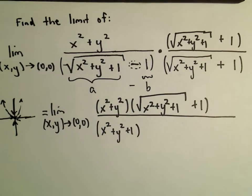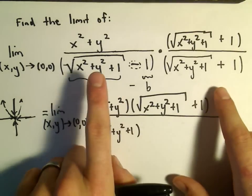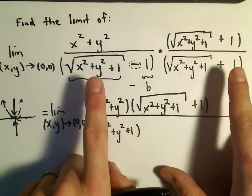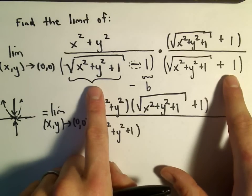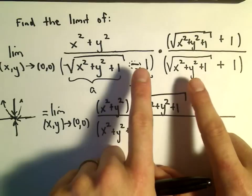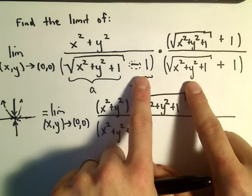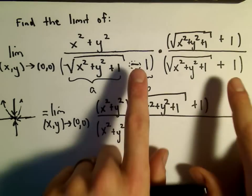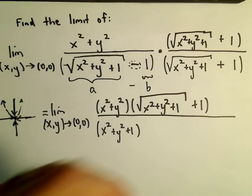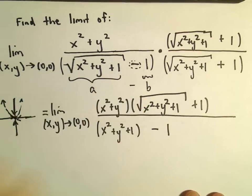And again, the point of multiplying by the conjugate: notice when we multiply on the outside, we'll get a positive square root of x squared plus y squared plus 1. But when we multiply on the inside, we'll get a negative square root of x squared plus y squared plus 1. So those would just cancel out and we would be left with a negative 1 times the positive 1, which would just give us negative 1.